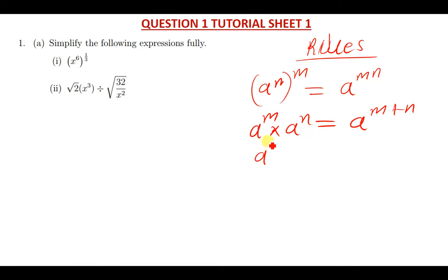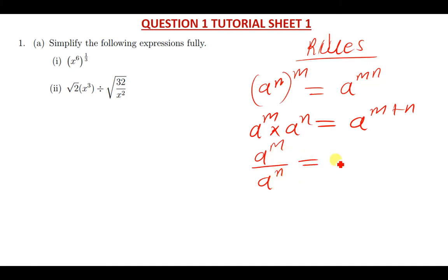When you are dividing numbers or indices with the same base — a to the power m divided by a to the power n — what you need to do is subtract: you write the base and subtract the powers, giving you a to the power m minus n.